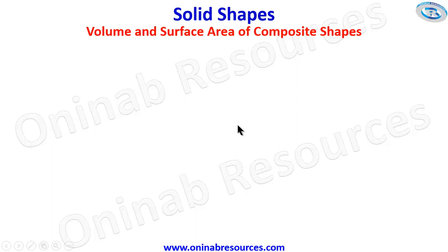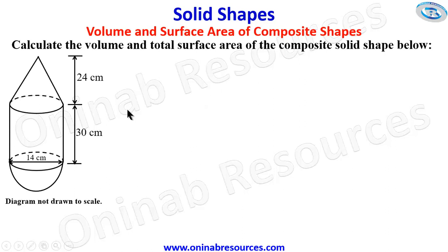Hello out there, welcome to this tutorial on solid shapes. In this video we'll be looking at volume and surface area of composite shapes. We start with the problem: calculate the volume and total surface area of the composite solid shape below, comprising a cone, cylinder, and hemisphere. Note that the diagram is not drawn to scale.